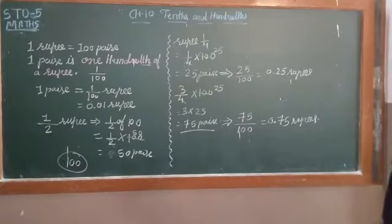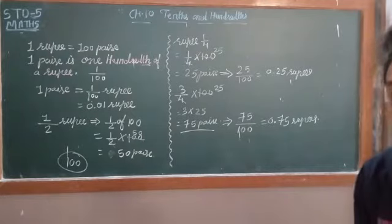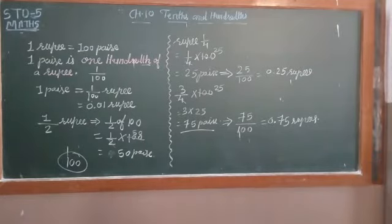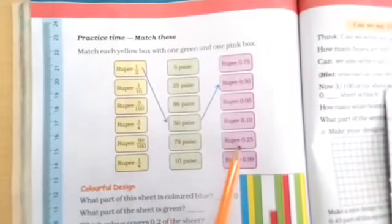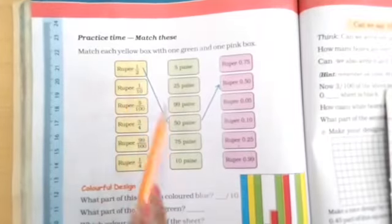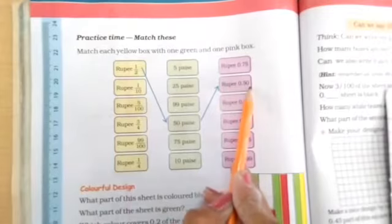This exercise is in your textbook, page number 140. Practice time is given — rupees and paise. Match the yellow box with one green and one pink box. Rupees are given here; these are paise and these are rupees. So: half means 50 paise, and we can write 0.50.